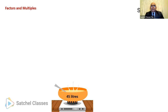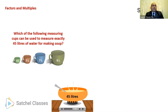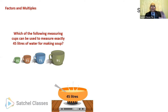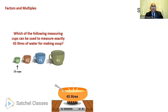Here's the starter question. Let's say we are trying to prepare 45 liters of soup. The question is: which of the following measuring cups can be used to measure exactly 45 liters of water for making soup, if you're allowed to use only full cups? So can we use a 3-liter cup? Yes, we can, because we can use 15 of those cups to make 45 liters — 3 times 15 is 45.